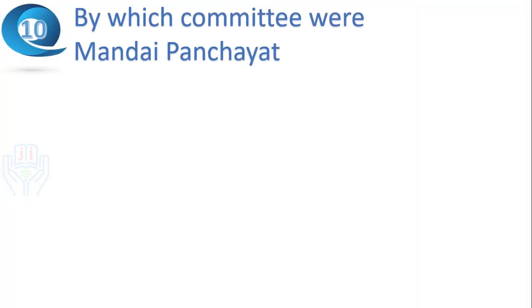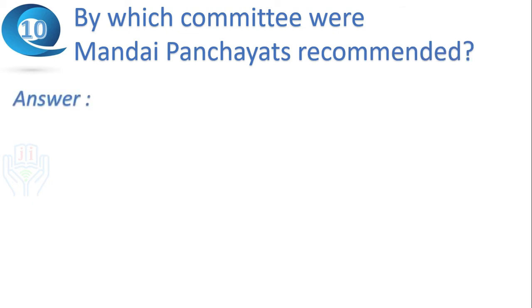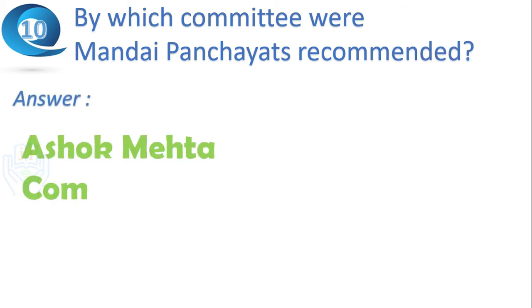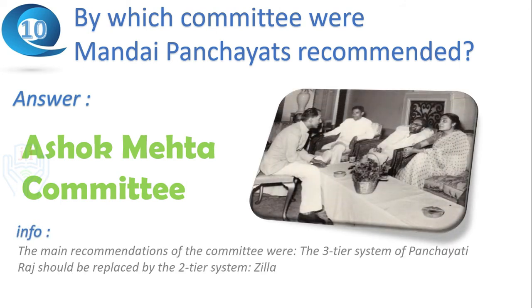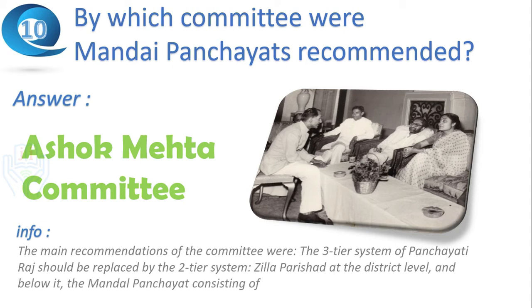Next question: by which committee were Mandal Panchayats recommended? Answer: Ashok Mehta Committee. The main recommendation of the committee was that the three-tier system of Panchayati Raj should be replaced by a two-tier system — the Zilla Parishad at the district level, and below it the Mandal Panchayat, consisting of a group of villages covering a population of 15,000 to 20,000.